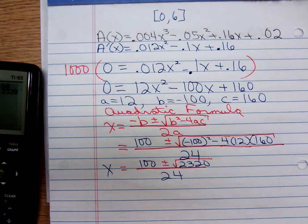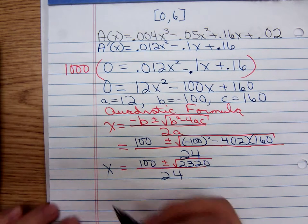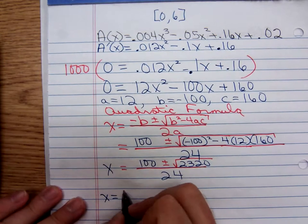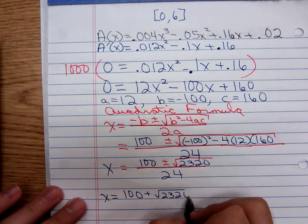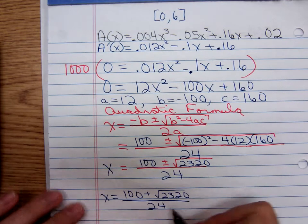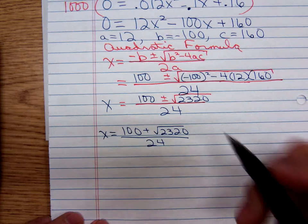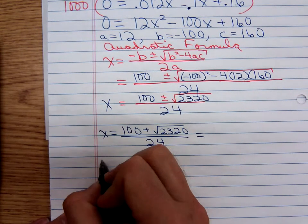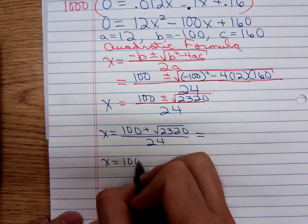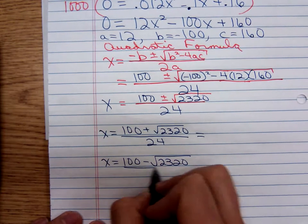At this point I'm going to split it up into two possibilities. We have 100 plus the square root of 2320 all over 24, and I'll get a decimal value for that in a moment. We also have 100 minus the square root of 2320 all divided by 24.